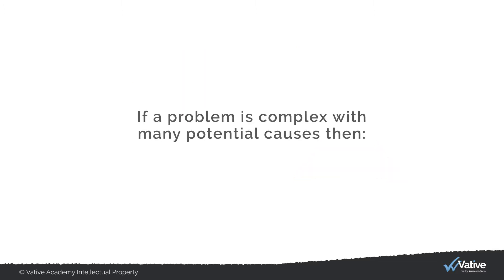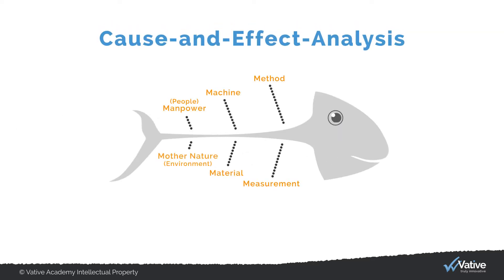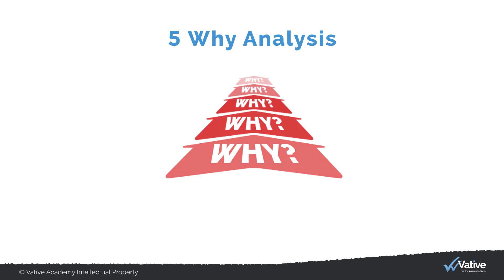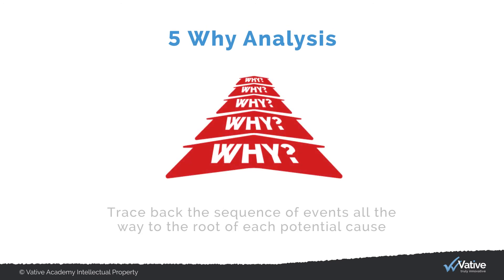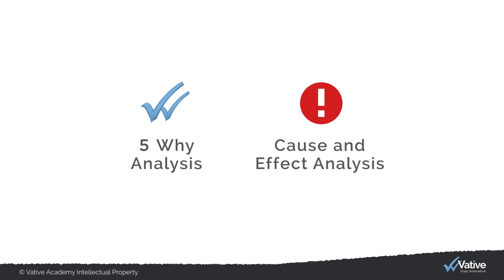If a problem is complex with many potential causes, then the cause and effect analysis — also known as fishbone or Ishikawa — should be used first to identify all potential causes. Then the 5Y analysis follows to trace back the sequence of events all the way to the root of each potential cause. The 5Y analysis should always be used, whereas the cause and effect analysis is an optional tool for complex problems with multiple potential roots.